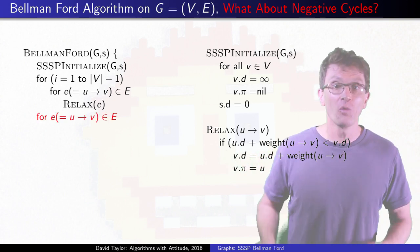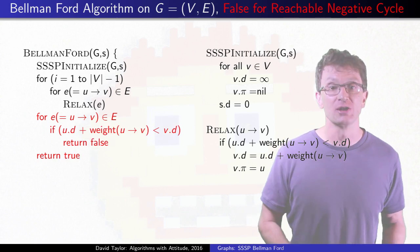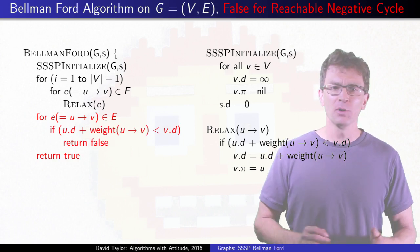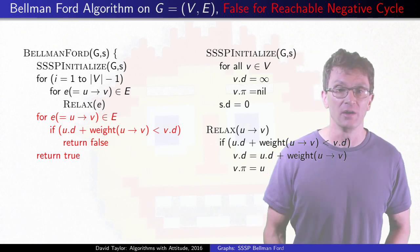So run one more round through the edges. If anything changes, we've found a reachable negative weight cycle. Maybe we just return false if there is a negative cycle, or true if there isn't.